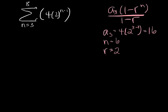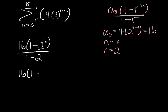Alright, so I'm going to have 16 times 1 minus 2 to the sixth power all over 1 minus 2. Let's see how much I can do here without my calculator. Let's see, this is going to give me 16 times 1 minus 64 all over negative 1.